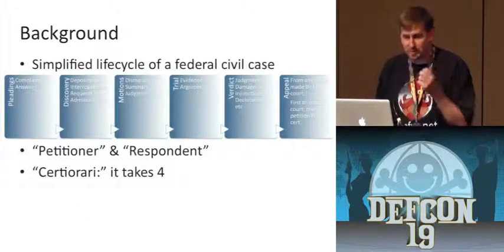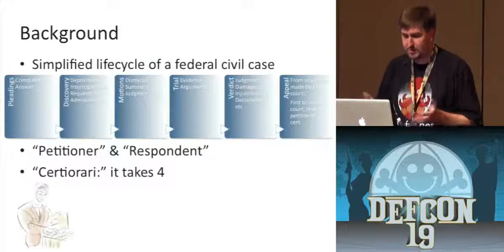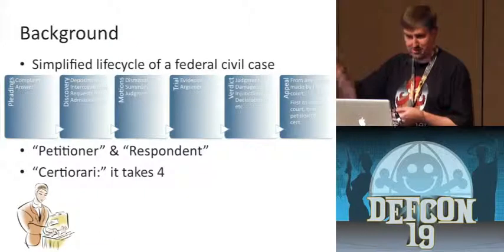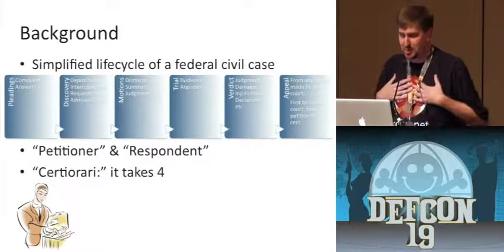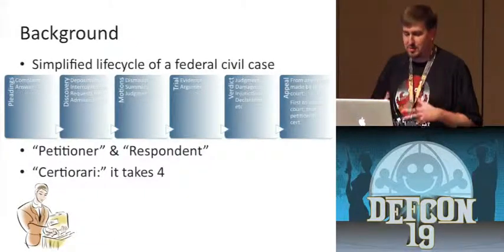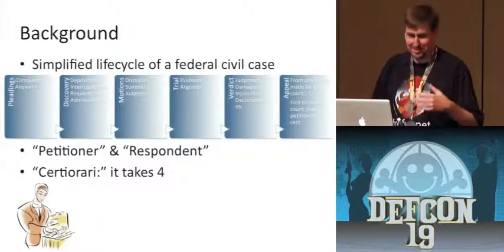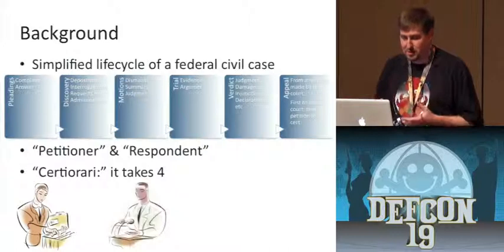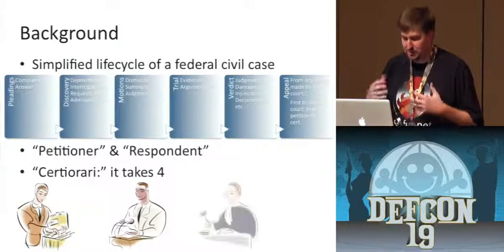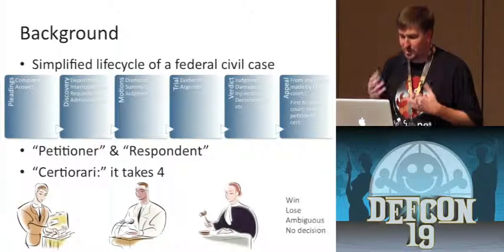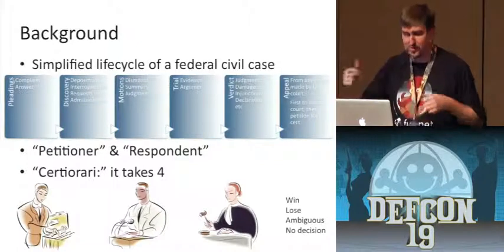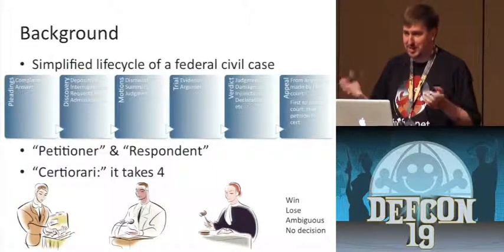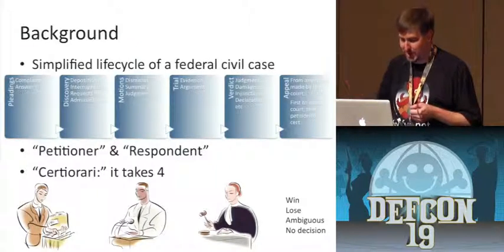Now we're at the Supreme Court. The first thing that happens is the parties file their briefs — essentially arguing why they win based on law and precedent. After the briefs are filed and read by the justices and law clerks, we'll have oral argument, then the justices deliberate and we get a result. Someone wins, someone loses, or maybe it's totally ambiguous, or maybe they just decide not to decide — those are all conceivable outcomes.